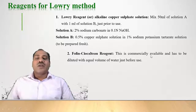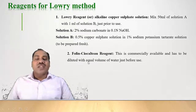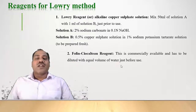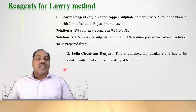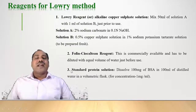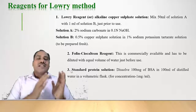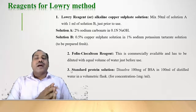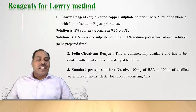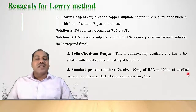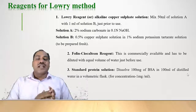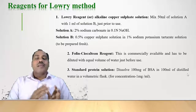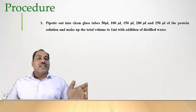The second reagent is the Folin-Ciocalteau reagent, which is commercially available ready-made and must be diluted with an equal amount of water just before use. The third reagent is the standard protein solution, prepared by dissolving 100 milligrams of BSA in 100 ml of distilled water in a volumetric flask, giving a concentration of 1 milligram per ml.